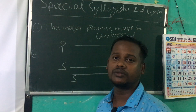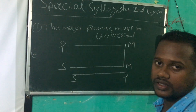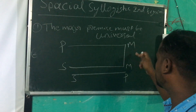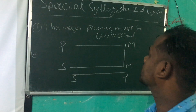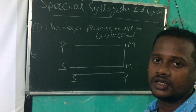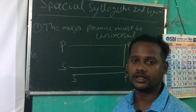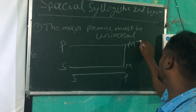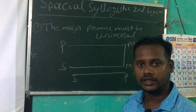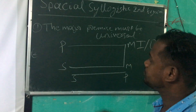When the middle term occurs as the predicate part in both the premises, this is called the second figure. Suppose in the second figure, the major premise is not universal — that is, it is particular. Particular propositions are I and O.